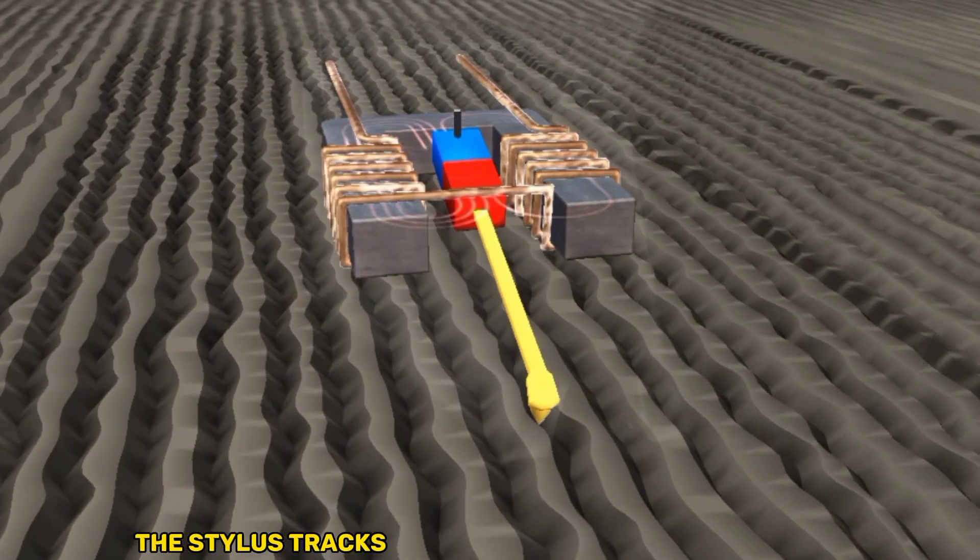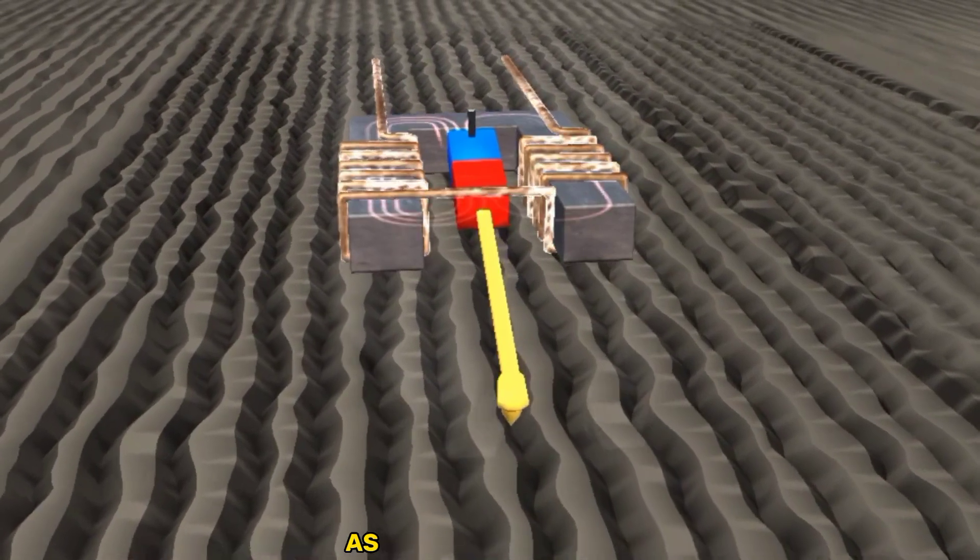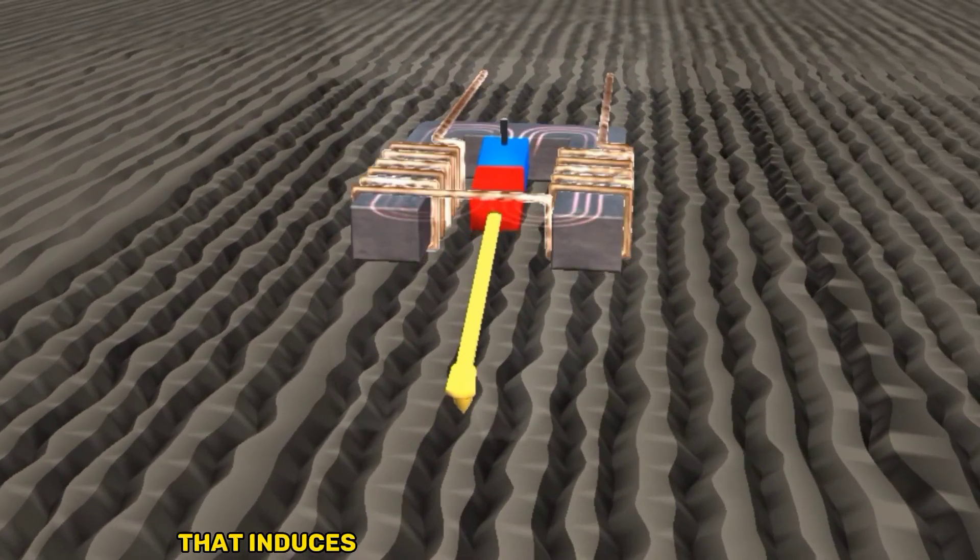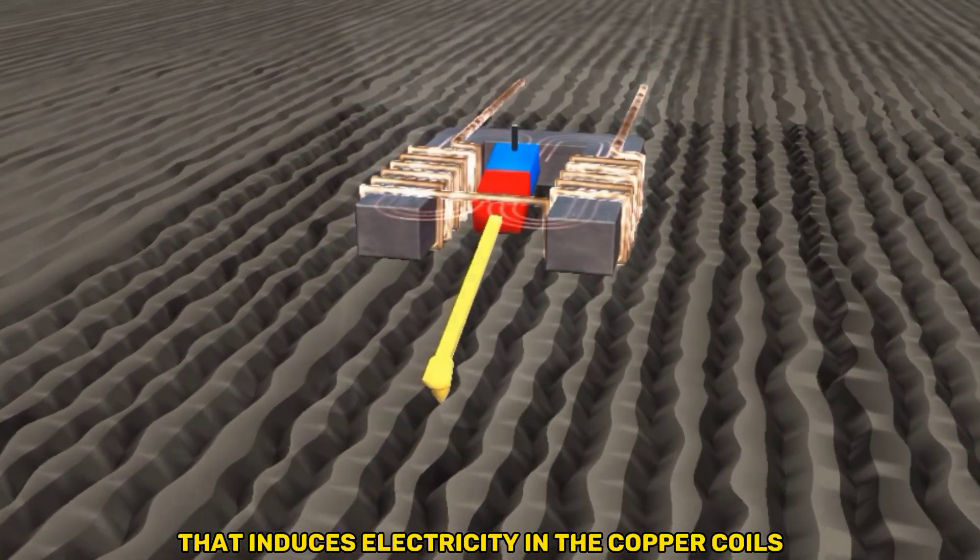The stylus tracks the modulations in the grooves as the record spins. The stylus moves a permanent magnet that induces electricity in the copper coils.